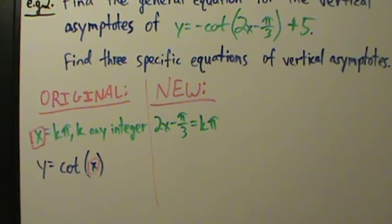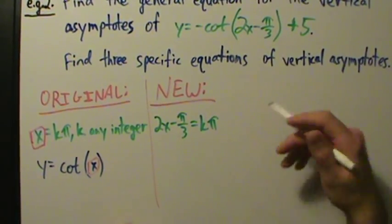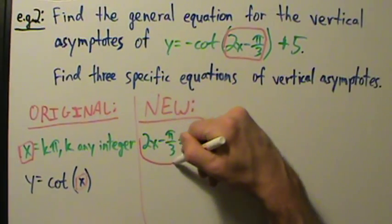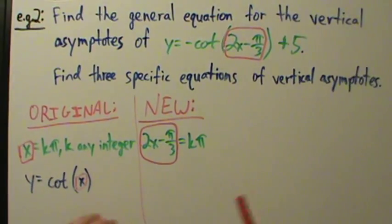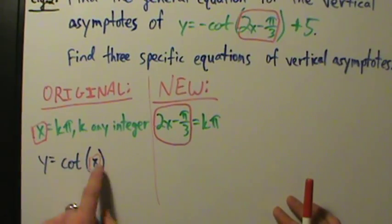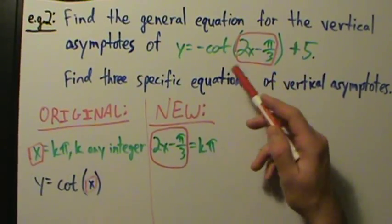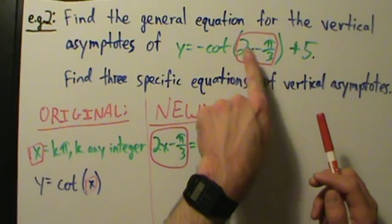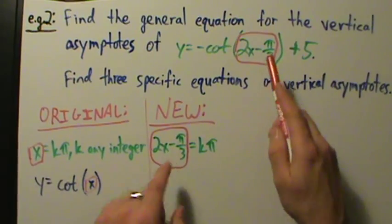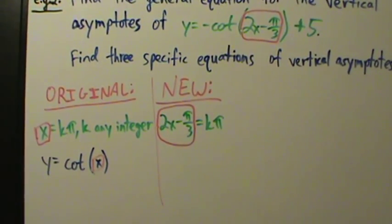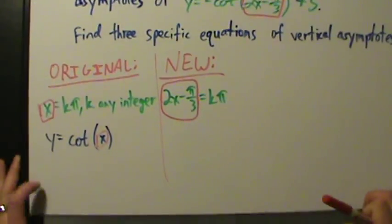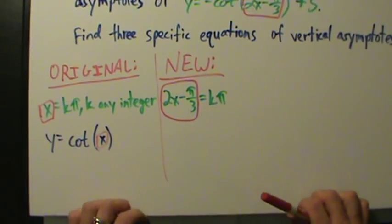Notice what we did here: we took this entire expression inside of the trig function, 2x minus pi over 3, and set it equal to k pi — just like for cotangent of x, we set the entire expression inside equal to k pi. Remember, with a tangent function we don't use k pi, we use something else, because the tangent function has different vertical asymptotes than cotangent.